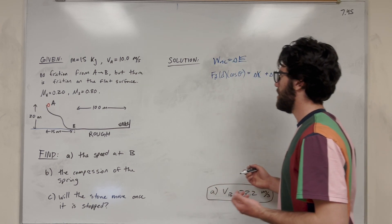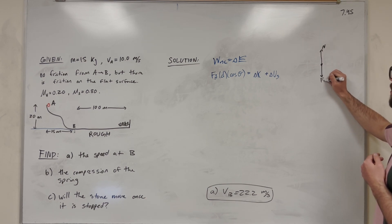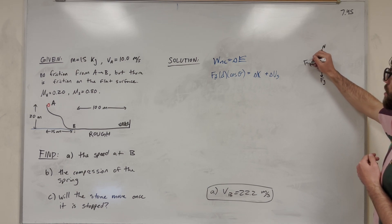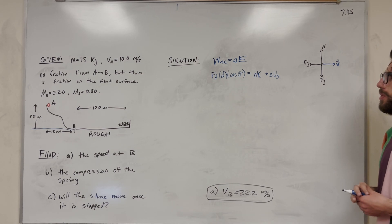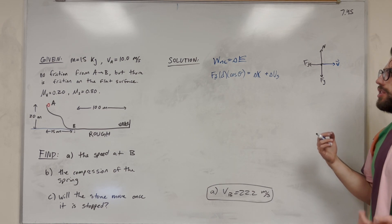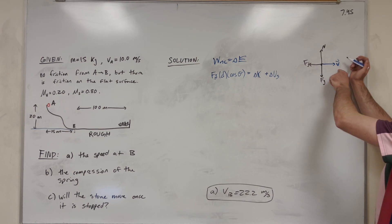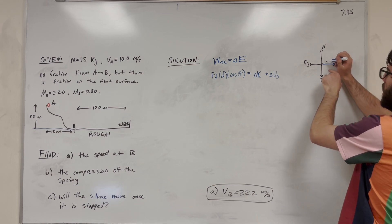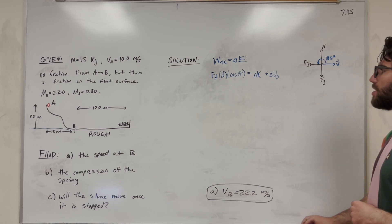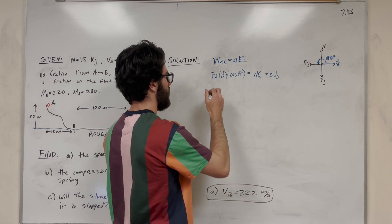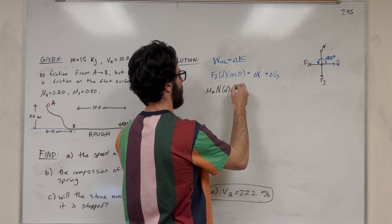Let's draw a quick free-body diagram. We have normal force pointing up, force of gravity pointing down, and force of friction opposing motion. Our velocity is pointing to the right. When doing force times distance times cosine of theta, theta is the angle between force and displacement. Force of friction points left and displacement goes right, so the angle is 180 degrees. Force of friction equals coefficient of kinetic friction times normal force, times distance times cosine of 180.